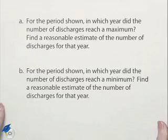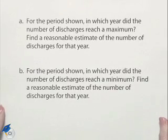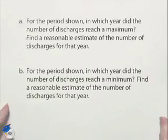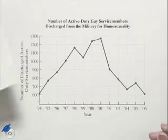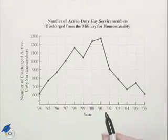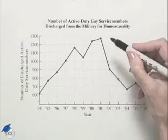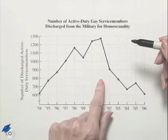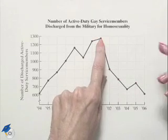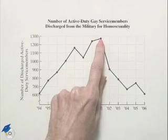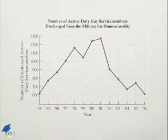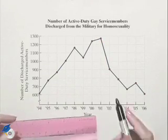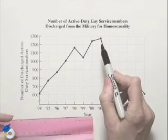For the period shown, in which year did the number of discharges reach a maximum? Find a reasonable estimate of the number of discharges for that year. To figure out the maximum, we're simply going to look at the highest value that we see. We can see that that occurred in the year 2001, and we're supposed to try to come up with a general estimate or a rough estimate of how many that would end up being.